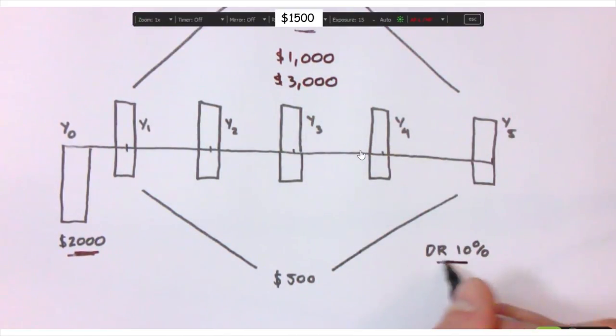Say the discount rate is 10%. So each year, you divide your $1,000 that you receive by one plus the discount rate, 10%, to the power of the year. So in the first year, that $1,000, its value is actually only $909.